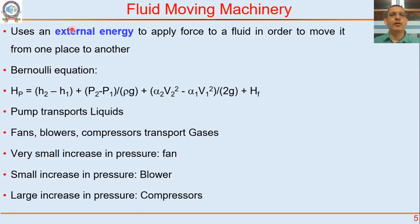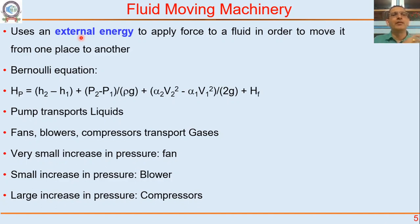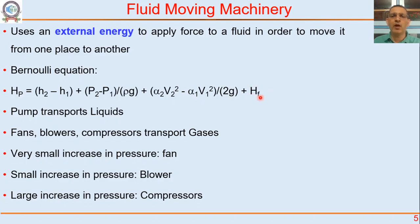Recall from your Bernoulli equation lectures that fluid moving machinery — either a pump or a compressor — uses external energy to apply pressure, to apply force, to give energy to the fluid, which is then at a higher pressure and able to go through the pipeline. This device is converting external energy — electrical energy into mechanical energy — and giving that energy to the fluid. The pump head required equals the hydrostatic head to be overcome, plus pressure head, kinetic head to be imparted, and head lost due to friction.